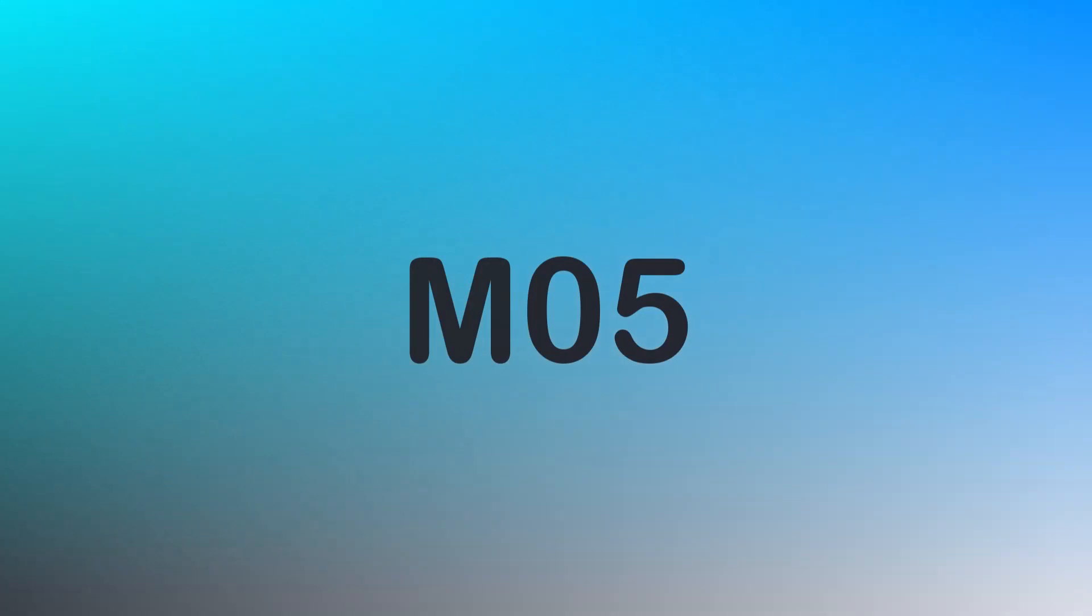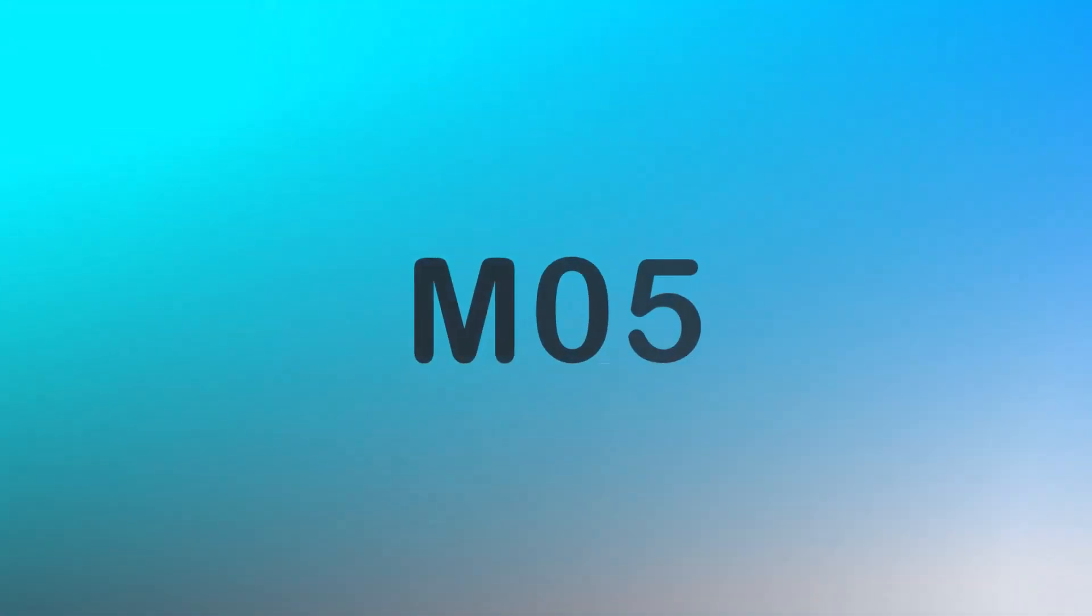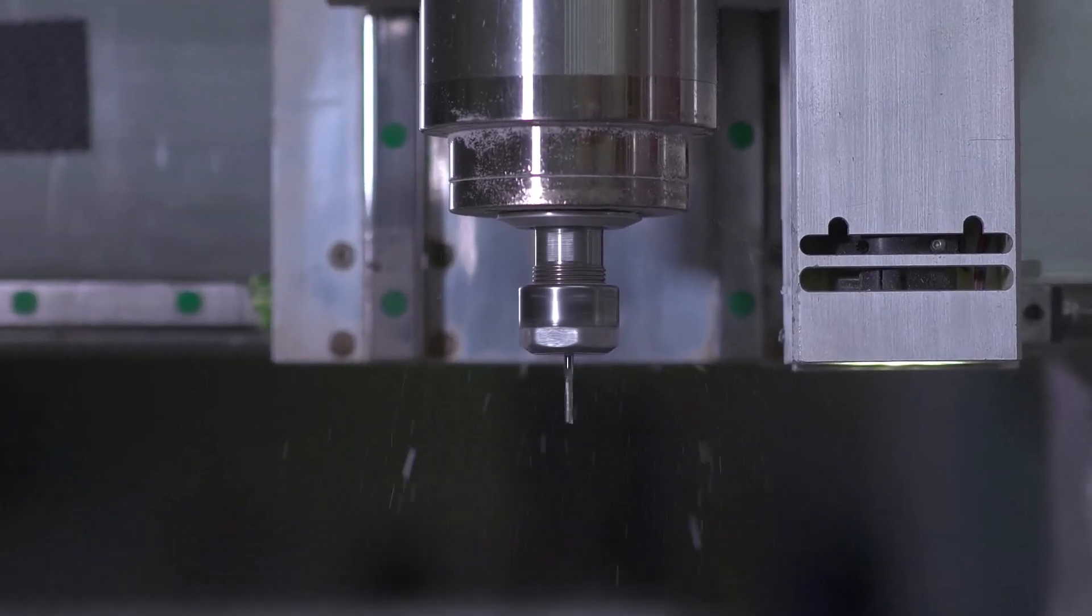Now, on to M05. This code stops the spindle. It's used when you've completed an operation and want to halt the spindle.